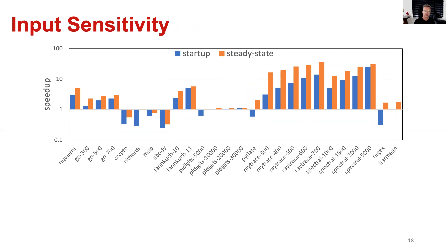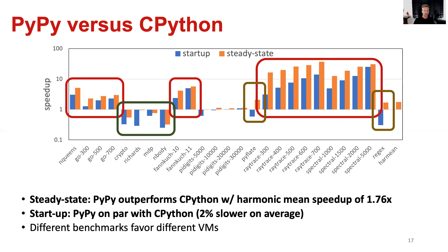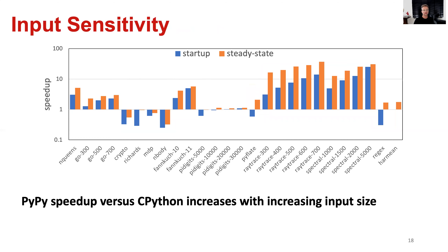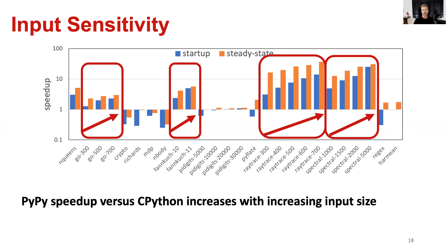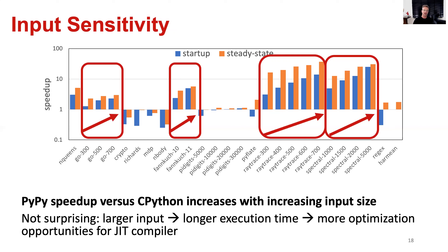Let's look at how input dataset sensitivity affects performance. For benchmarks where we consider multiple input sets, we find that PyPy's speedup versus CPython increases with increasing input size. This is clear for benchmarks like Go, Fannkuch, RayTrace, and Spectral. This is not unexpected: a larger input means longer execution time, which gives more optimization opportunities for the JIT compiler.